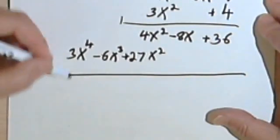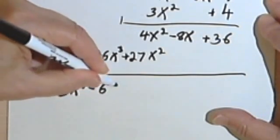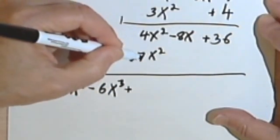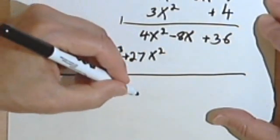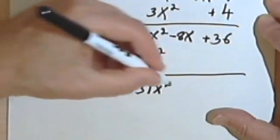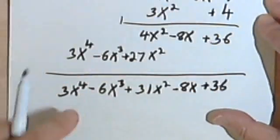Okay, adding up my columns: I've got 3x to the fourth minus 6x to the third plus, 27 plus 4 is 31, 31x squared minus 8x plus 36.